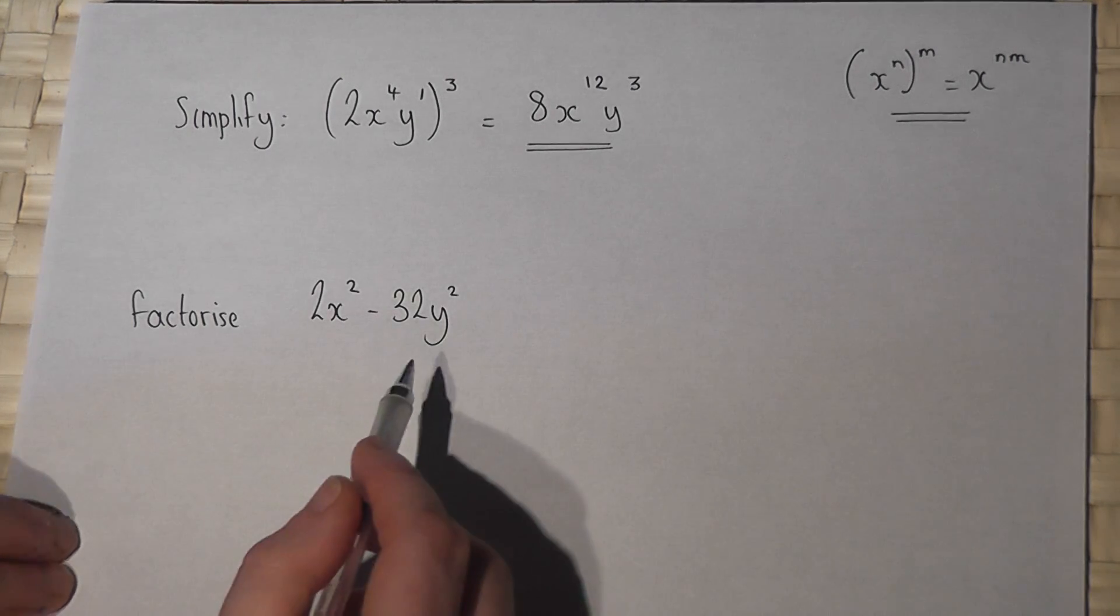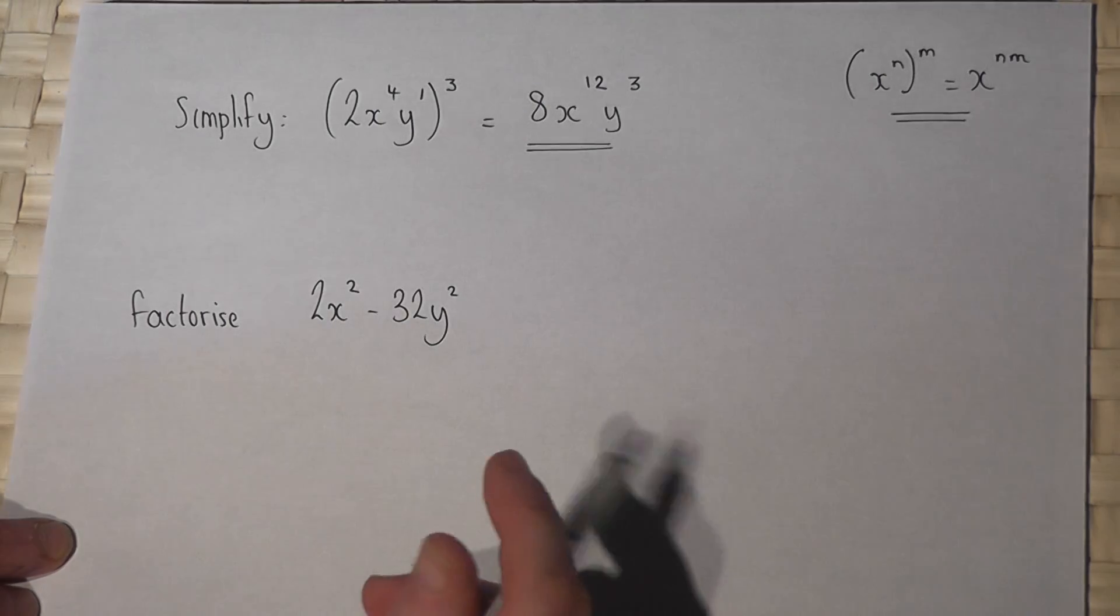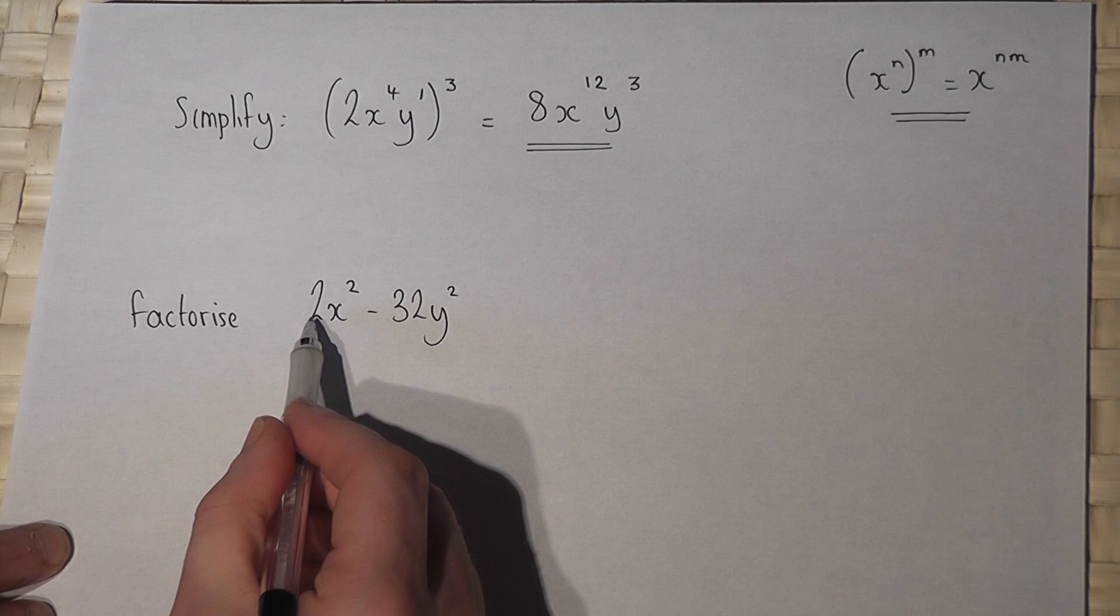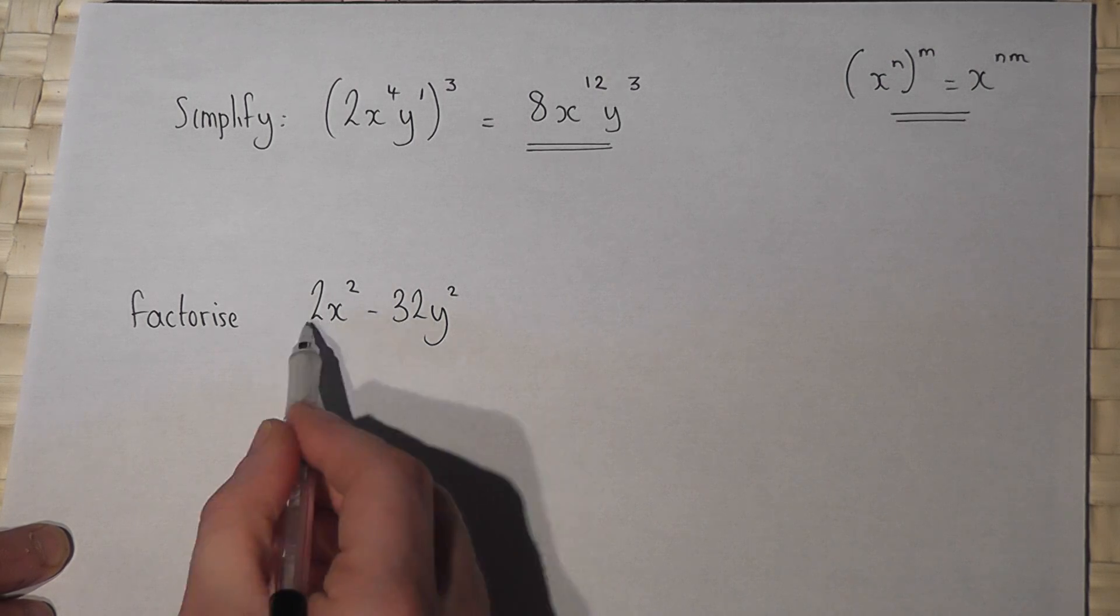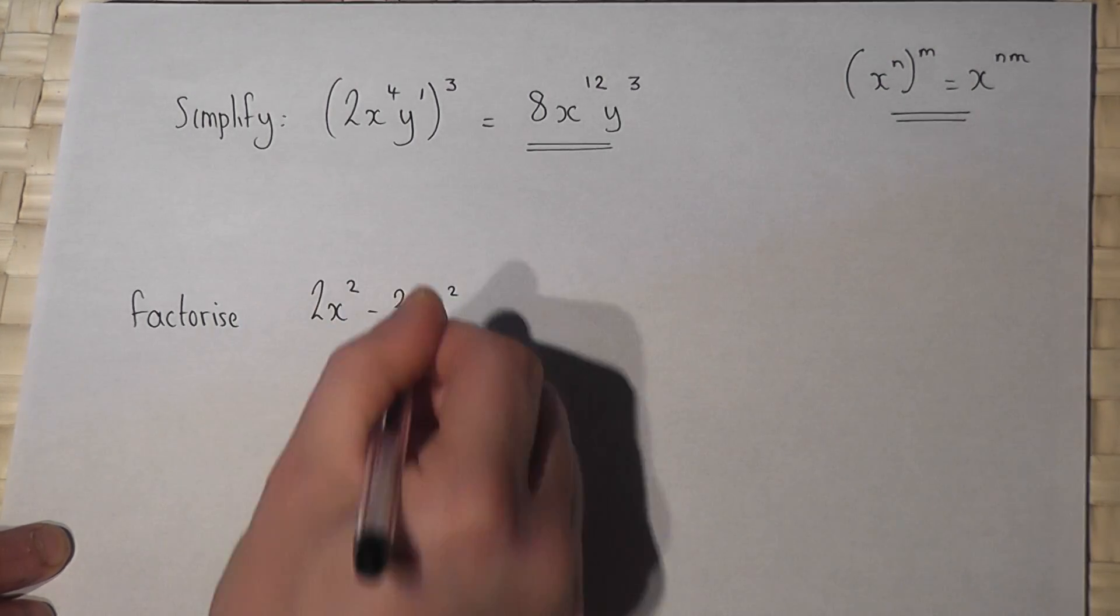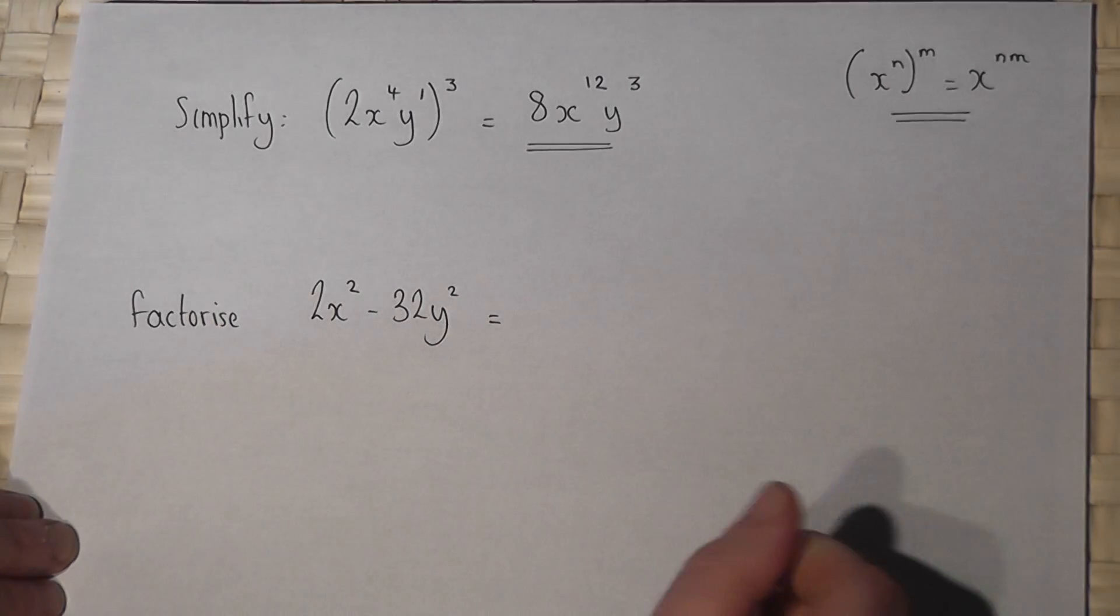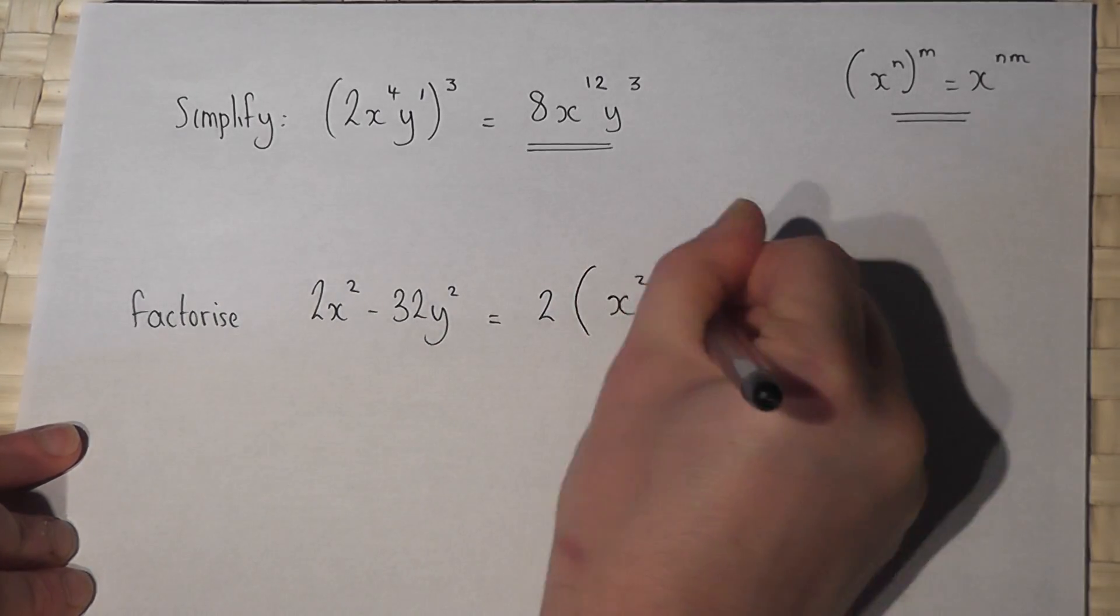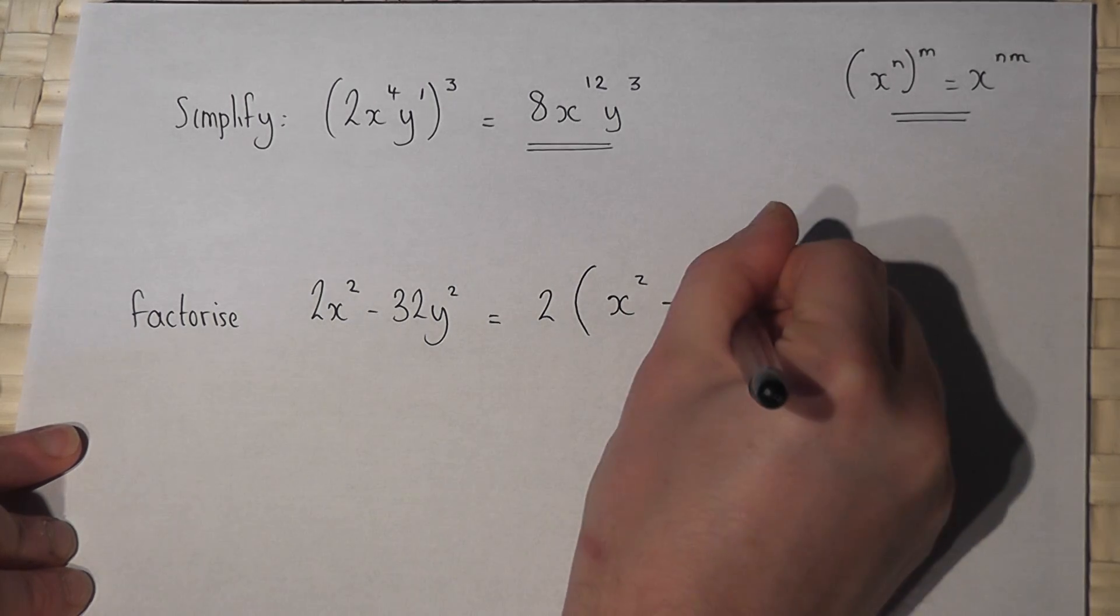Now part 2 brings out a really important skill, factorizing. First of all we observe that there's a factor of 2 in both parts of this expression so I can write 2 open bracket x squared minus 16y squared.